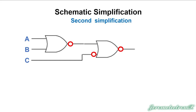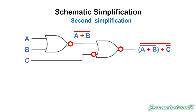Let's go to the second simplification. We pull the equation out: that's A plus B, NOTted. And then we've got a NOT C that we're going to add to it, and then NOT it again. So we've got A plus B — preserving parenthetical relationships — going to add the C which is NOTted, and then the whole thing is NOTted at the very end. This is our resulting Boolean expression. Now we're going to push the bubbles to simplify the schematic.